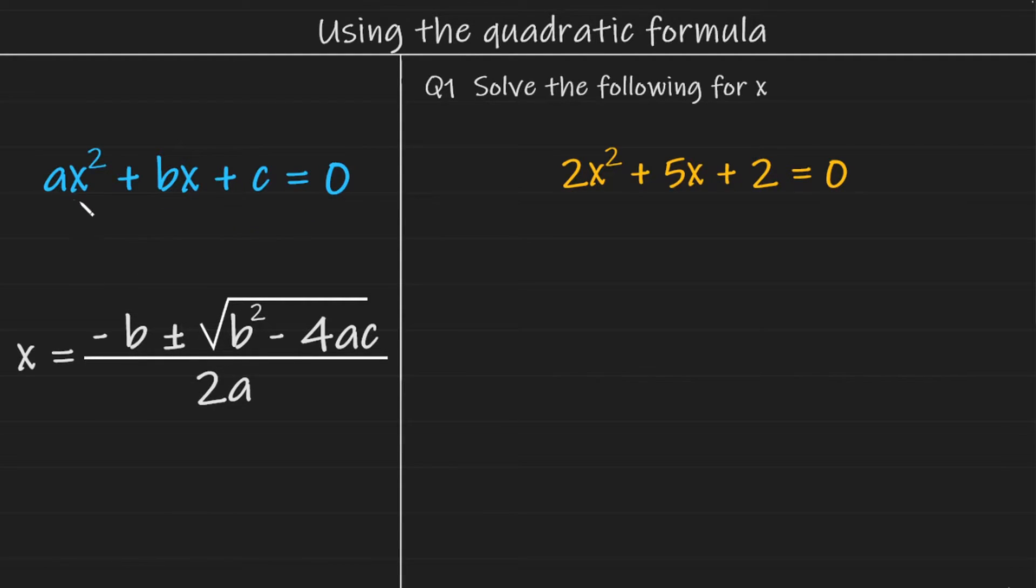a is the coefficient of x squared, b is the coefficient of x, and c is the constant.